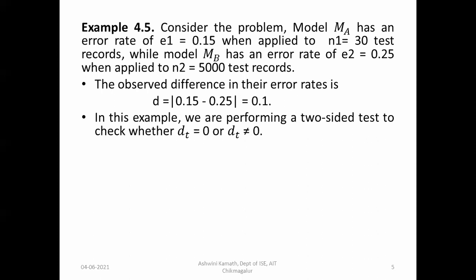In this example, we are performing a two-sided test to check whether Dt = 0 or Dt ≠ 0. If Dt = 0, it matches the null hypothesis, meaning there is no significant difference between the two models. If Dt ≠ 0, it is not significant.